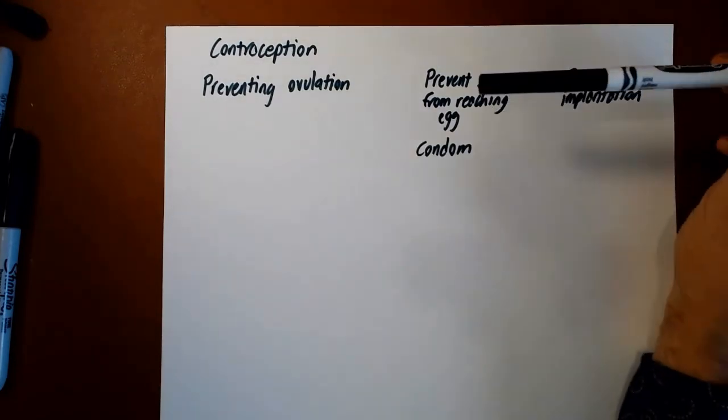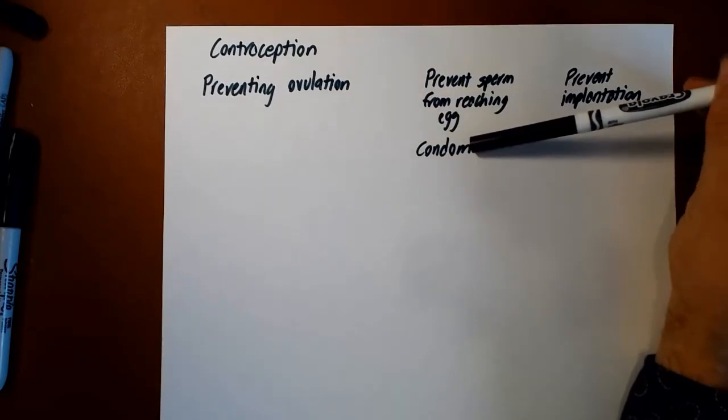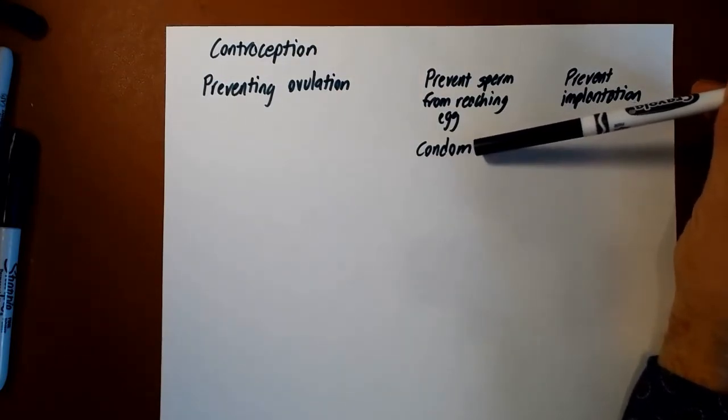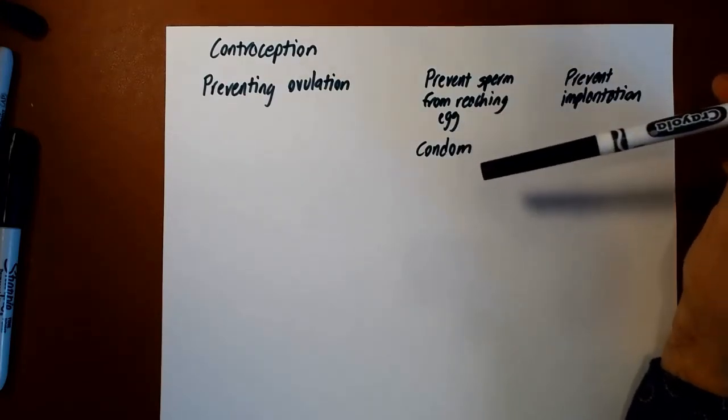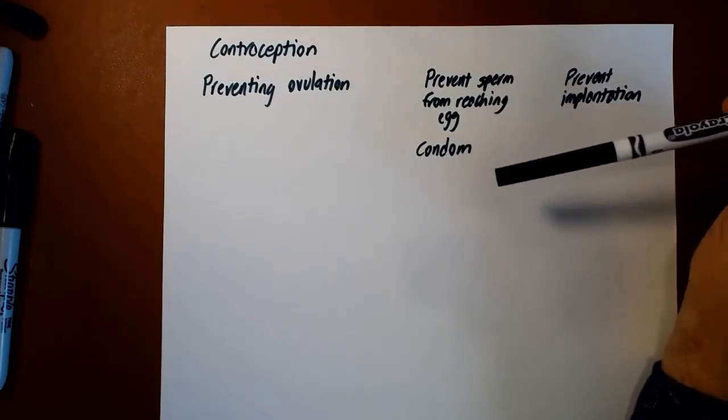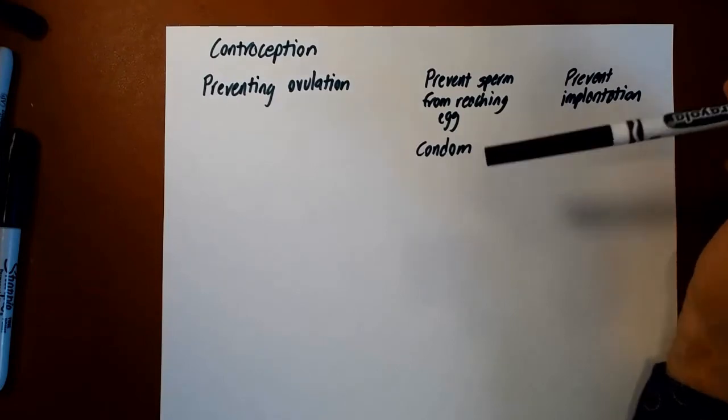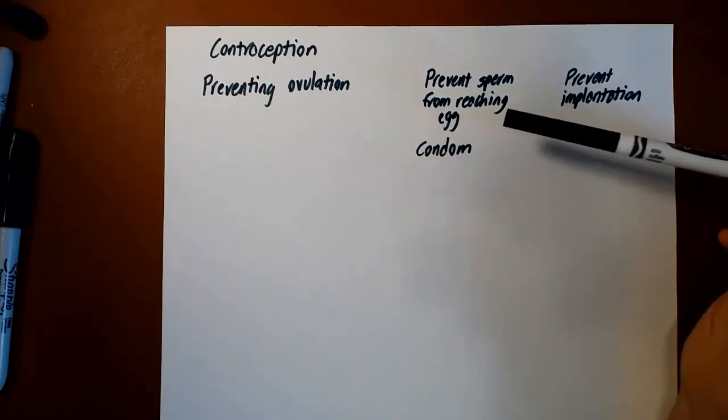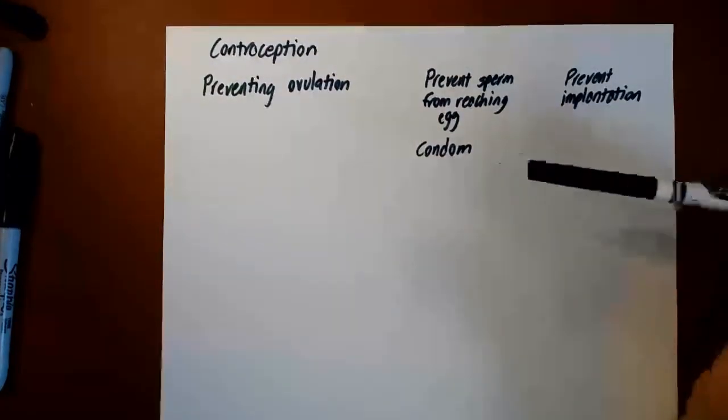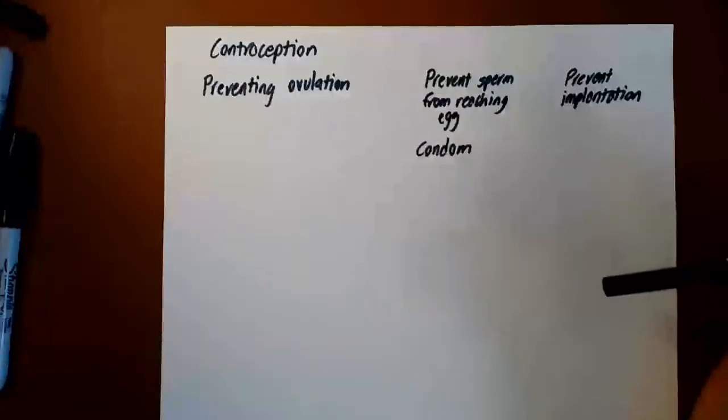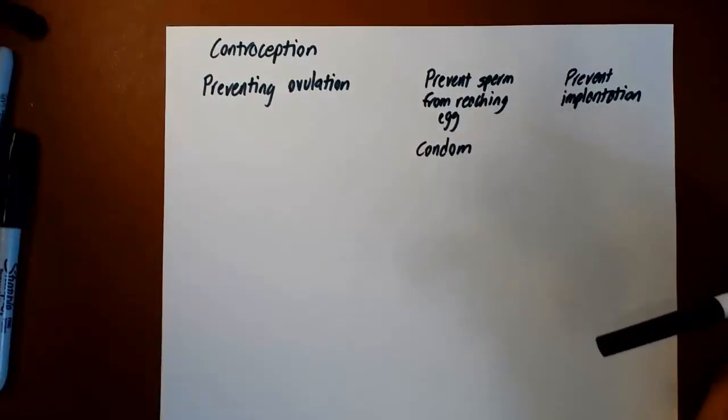Worthy of note, of the methods we're going to talk about, these are effectively the only ones that provide any protection against sexually transmitted diseases. Most of these other methods of contraception do absolutely nothing to protect you against disease. In any case, condoms are one of the ways you prevent sperm from reaching the egg. There are some other ways, diaphragms and cervical caps, but those are very rarely used these days, so we don't really talk about them all that much.